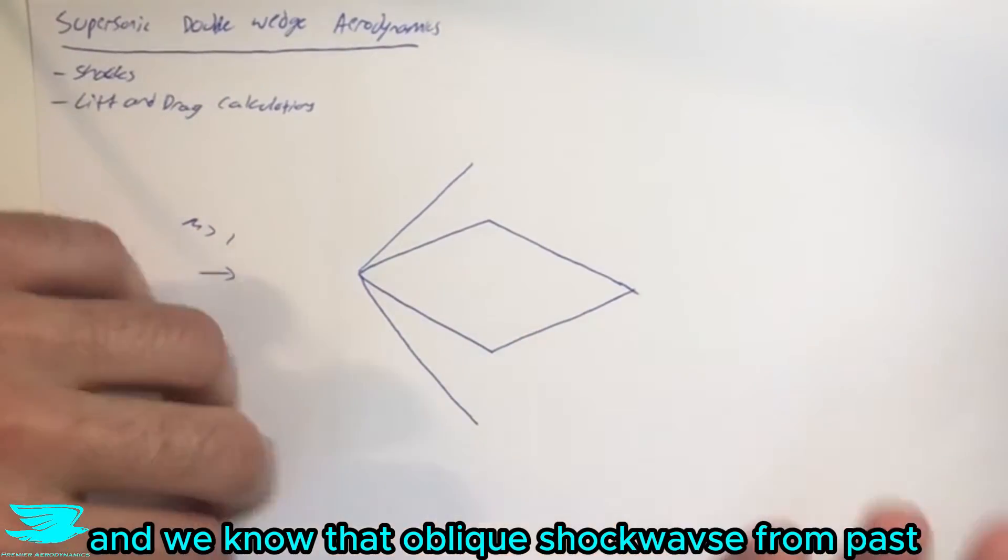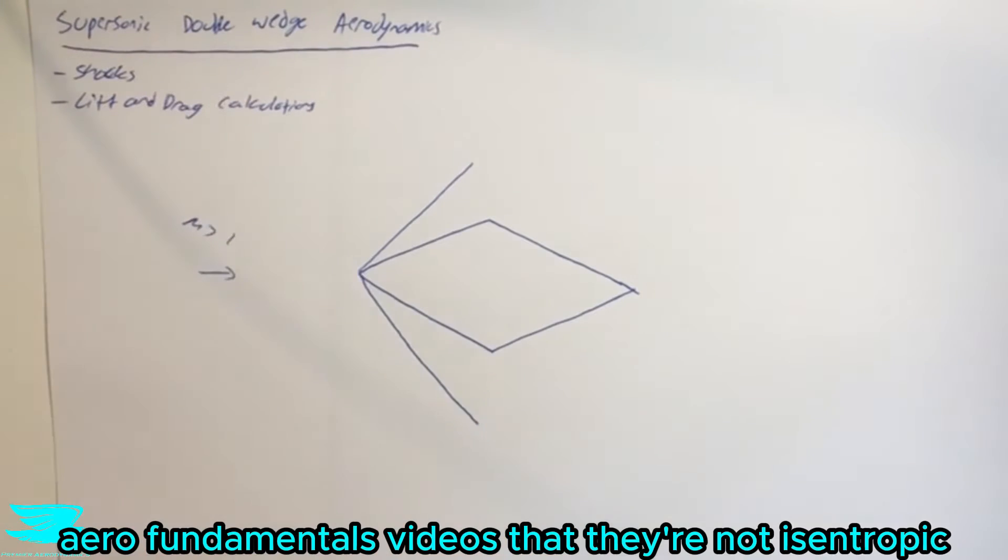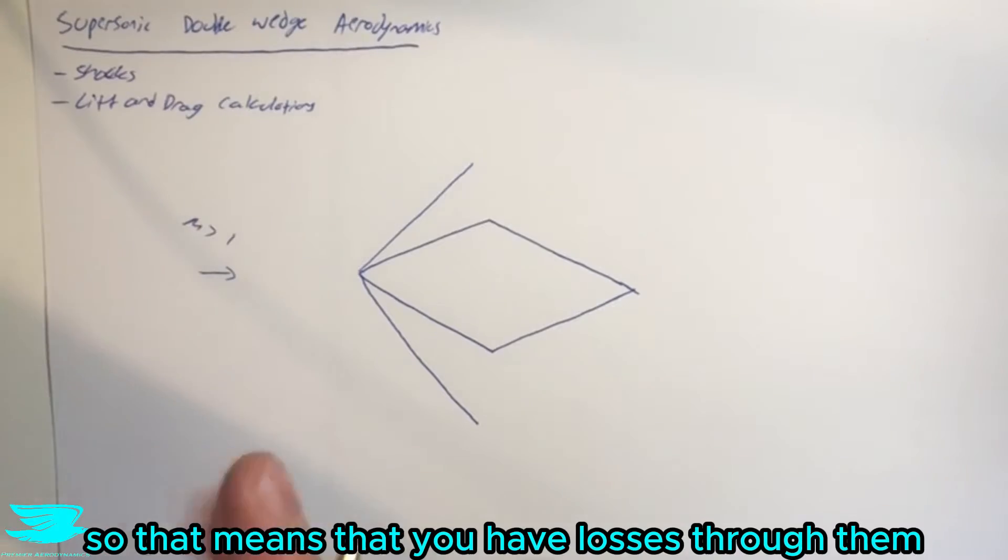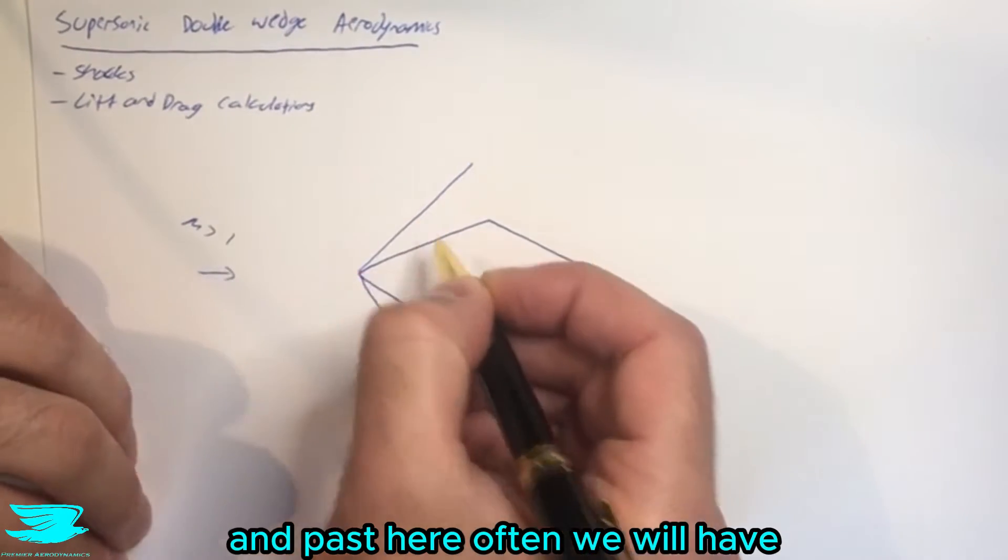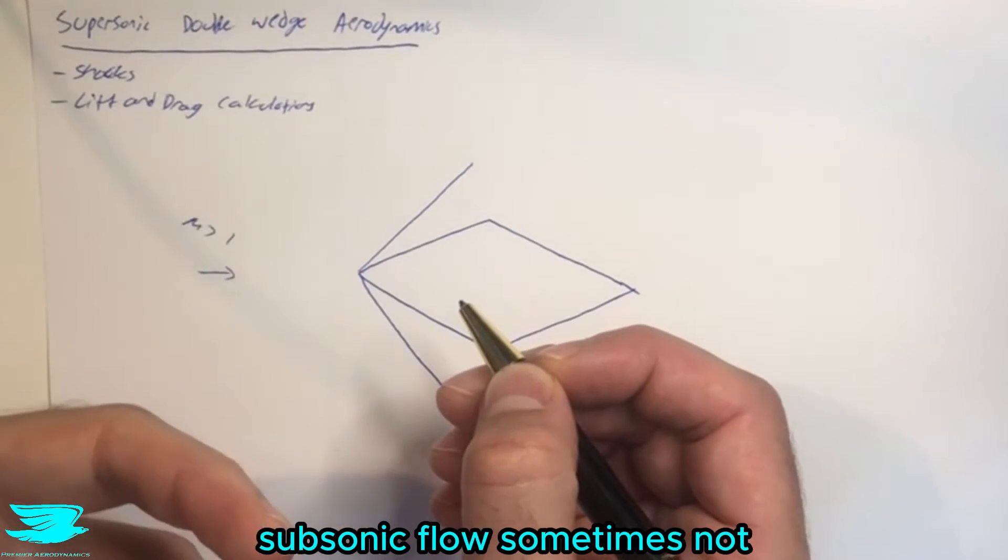And because we're traveling at supersonic speeds, the flow really can't get out of the way fast enough. So that means we start to get an oblique shockwave forming. And we know that oblique shockwaves from past air fundamentals videos are not isentropic. That means that you have losses through them. And past here, often we will have subsonic flow, sometimes not.